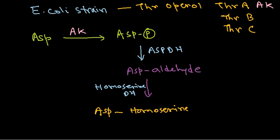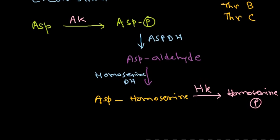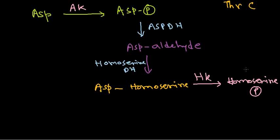Once homoserine is obtained, it will be phosphorylated by homoserine kinase, producing homoserine phosphate.